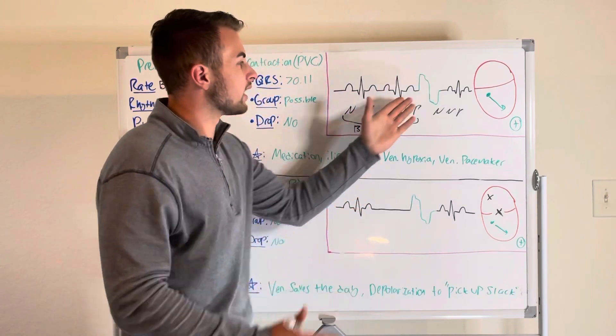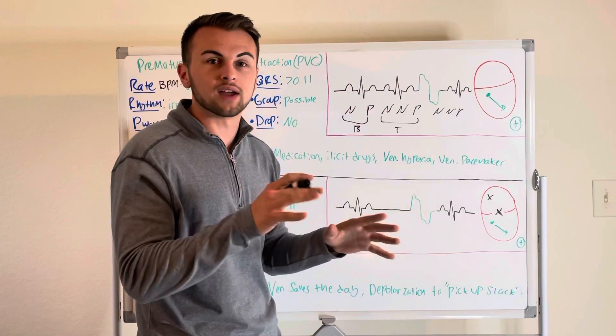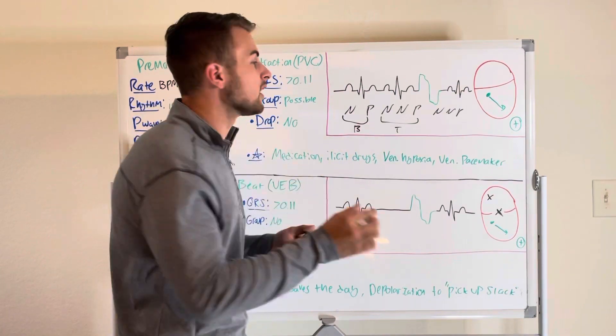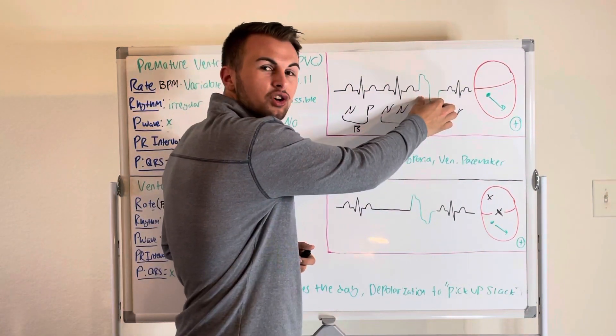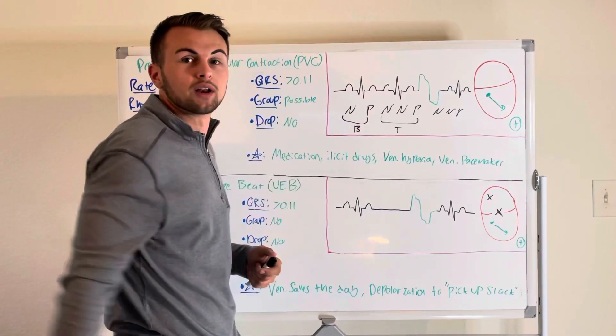But the key point here is to remember that PVCs can look all sorts of different ways. But remember that the one thing that they have in common is that they are strange looking wide QRS complexes that are greater than 0.11 seconds.